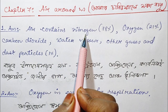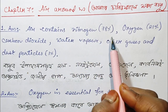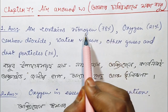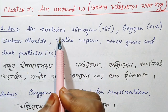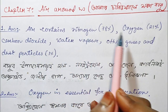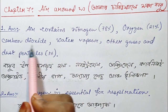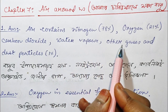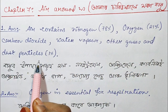Air contains nitrogen 78%, oxygen 21%, carbon dioxide, water vapour, other gases and dust particles.